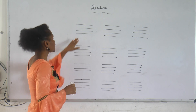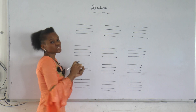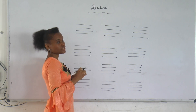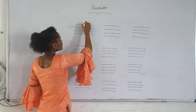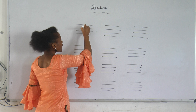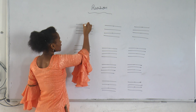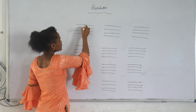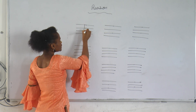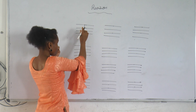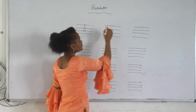First letter is E. I will show you how to write E. First you have to write standing line, sleeping line, sleeping line, sleeping line. E. E for egg.